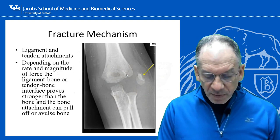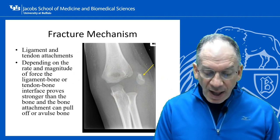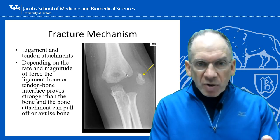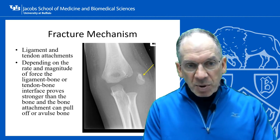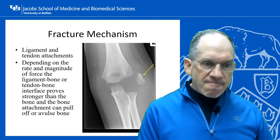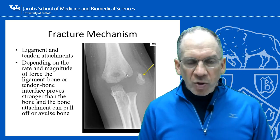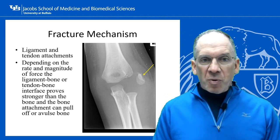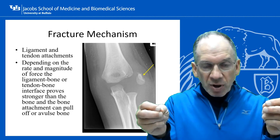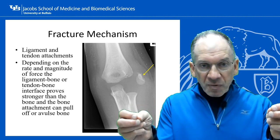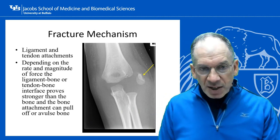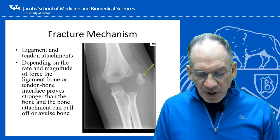Fracture mechanism. Ligaments and tendon attachments determine the pattern of fractures. What is hurt depends on the rate of force application, the magnitude of force application, and what the weakest link is. Think of a rubber band: if you stretch it very slowly you'll stretch it further before it fails, but if you pull it quickly it will fail sooner. That's the effect of rate of force application.